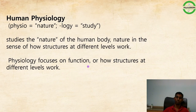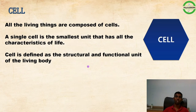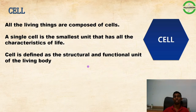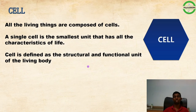Living things are composed of cells. We are all made up of millions to trillions of cells. The cell plays a main role in the body — a single cell is the smallest unit that has all the characteristics of life. The cell is the structural and functional unit of the living body.